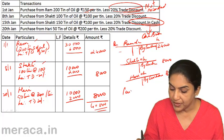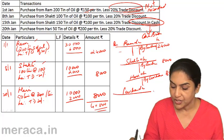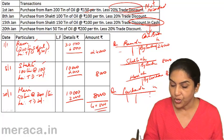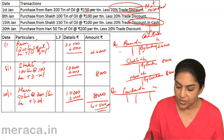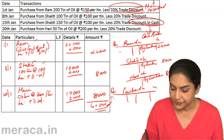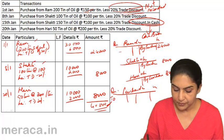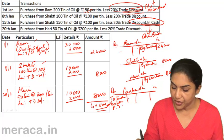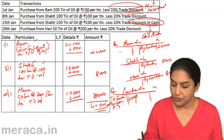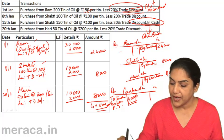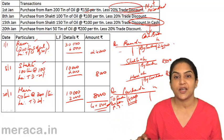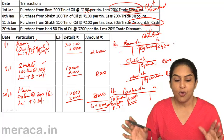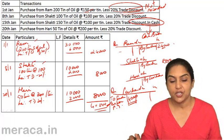Next, we open the purchases account in the ledger. What do we post here? The total — 40,000. We write here 'To Sundries as per Purchase Journal', 40,000. So 40,000 is a debit; 24,000, 8,000, and 8,000 are the credits. This is how posting is done from the purchase journal to the ledger accounts.